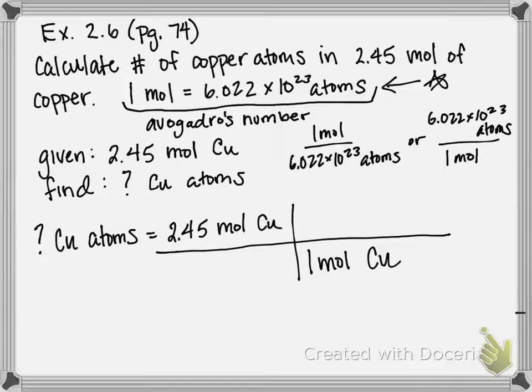And on the top is the number of atoms contained in 1 mole: 6.022 times 10 to the 23rd atoms. If you want to specify, it is copper. So at this point, moles of copper cancel.